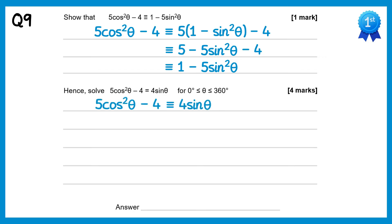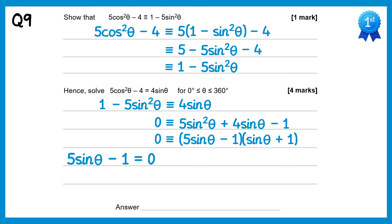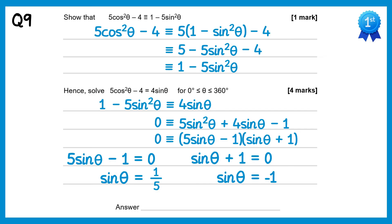We're then asked to use this to solve the equation. Since the left hand side of the equation is the same as the left hand side of the identity, we can replace it with 1 minus 5sin²θ. Rearranging gives 0 equals 5sin²θ plus 4sinθ minus 1, which factorises to (5sinθ − 1)(sinθ + 1) equals 0. So either sinθ equals 1/5, giving inverse sin of 1/5 as 11.5 degrees and 180 minus 11.5 as 168.5 degrees, or sinθ equals negative 1, giving 270 degrees. So there are three solutions: 11.5, 168.5 and 270 degrees.